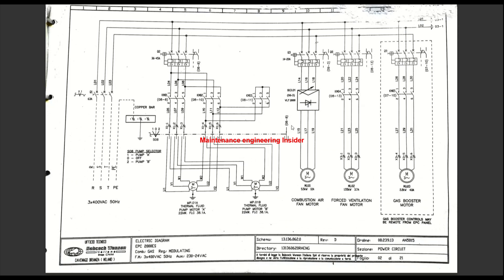Looking further down the page, we have the thermal fluid pumps again with more information. This is the selector switch we are looking at, and they are linked to connectors — remember X is used to represent connectors. So these cables are coming from connectors X111, X12, X13. Tracing further, we find three contactors: this contactor represents star, this is delta. So KM3 is star, KM2 is delta, and KM1 is the main contactor.